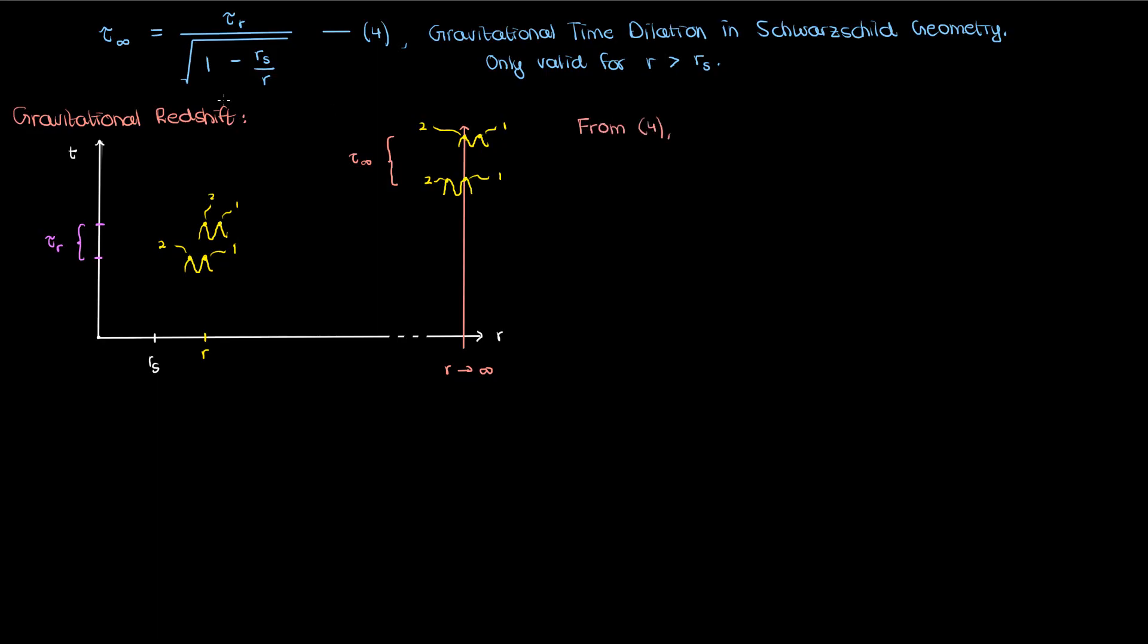From equation 4, the relationship between tau infinity and tau sub r is the following. Because of this we see that the corresponding frequency of the photon measured by the observers is as follows, since the frequency is just the inverse of the period. I'll call this equation 5. Now this equation demonstrates gravitational redshift. A photon fired closer to a massive object has its frequency redshifted or lowered as it moves further from that mass.